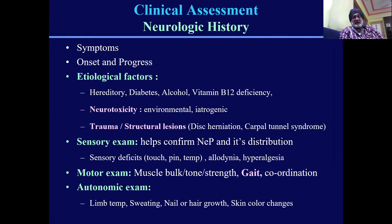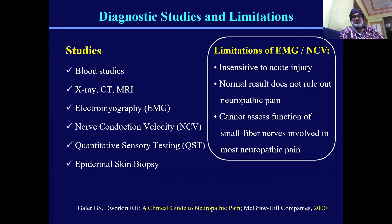In clinical assessment, it is vital to understand the neurological history — the onset and progress of the disease. The possible etiological factors include diabetes, alcohol, vitamin deficiency, cancer, environmental toxicity, or trauma. An examination of the sensory, motor, and autonomic systems is also important — particularly temperature changes, sweating, nail and hair growth changes, or skin color changes, which play a very important role in the autonomic component of neuropathic pain.